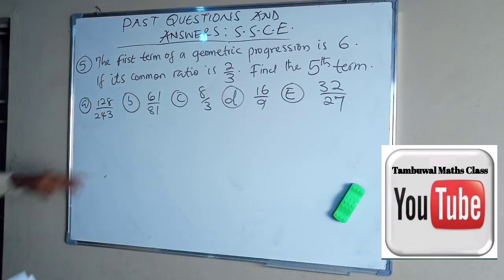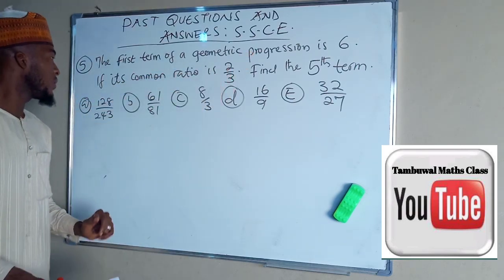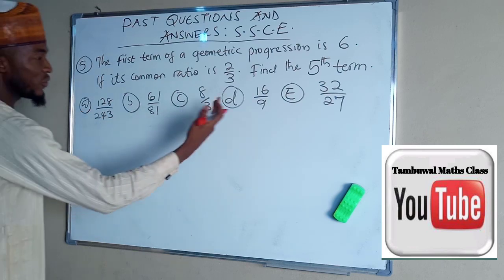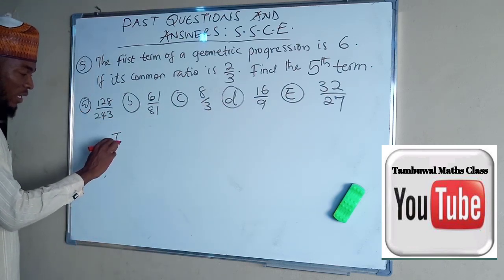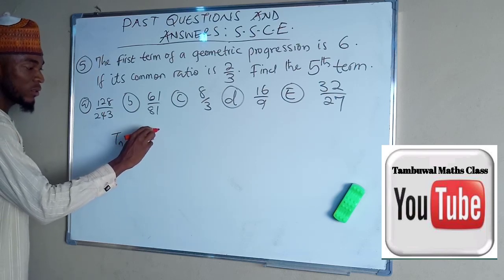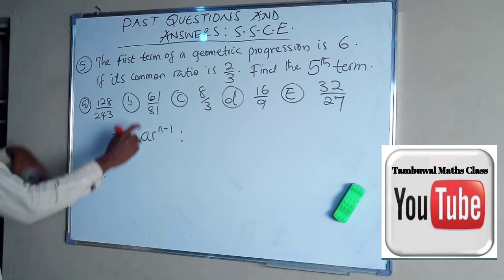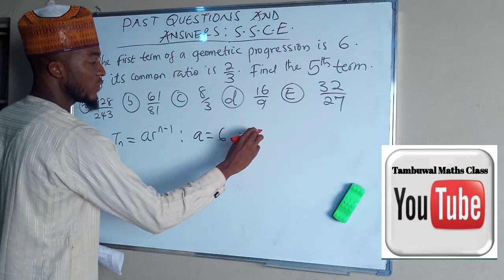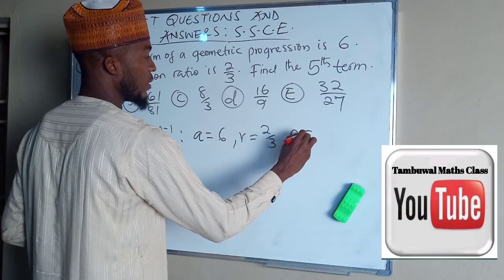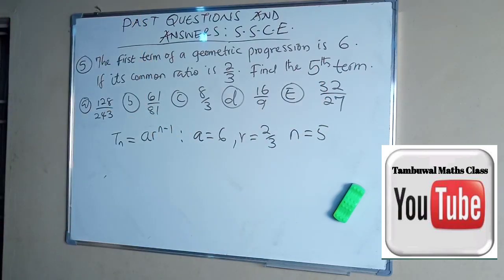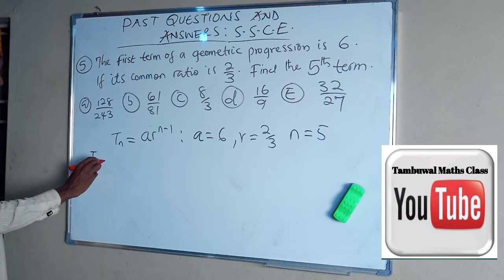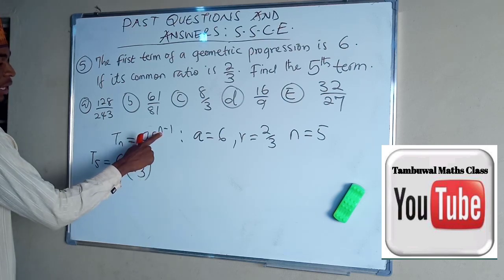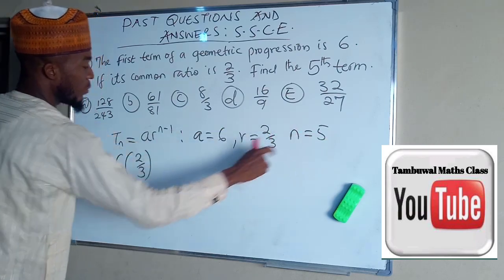Question number 5. The first term of geometric progression is 6. If its common ratio is 2 over 3, find the fifth term. We are given available options. So every term of geometric progression, TN, is equal to AR power N minus 1. So in this case, we are given A, which is the first term as 6, and the common ratio, R, as 2 over 3. And the N equals to 5, which is the fifth term. So let us apply this. T5 equals A is 6, R is 2 over 3, and N minus 1 is 5 minus 1, which is 4.